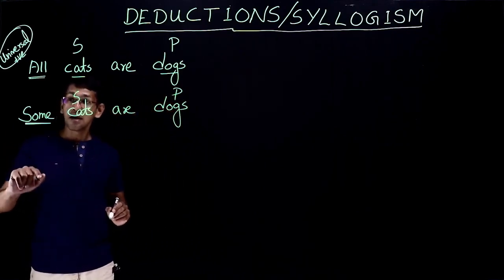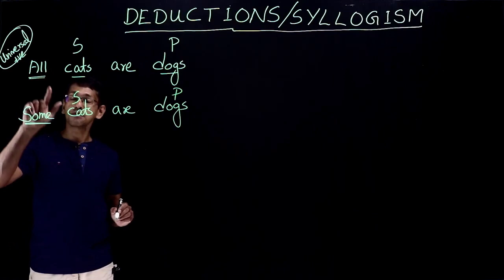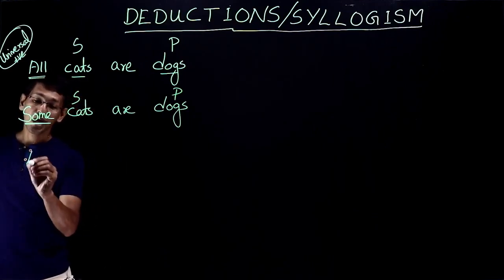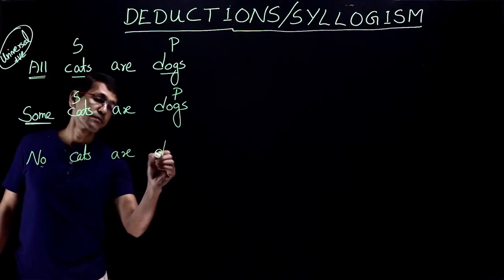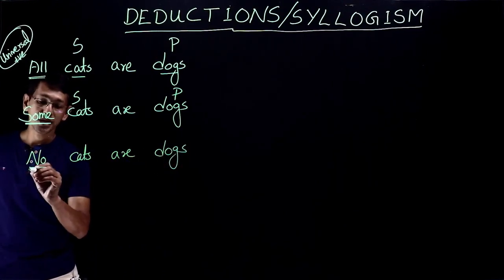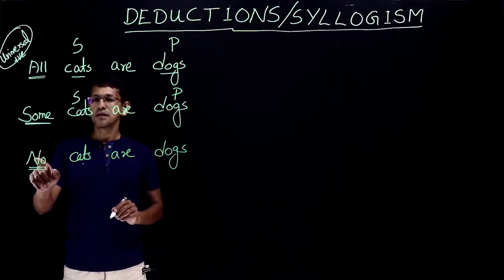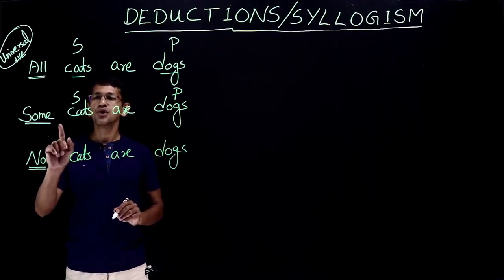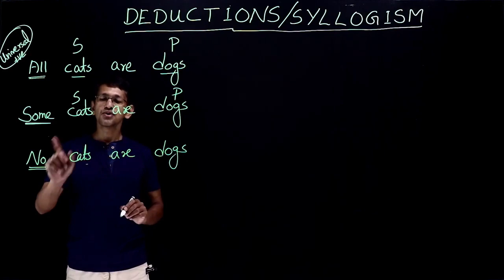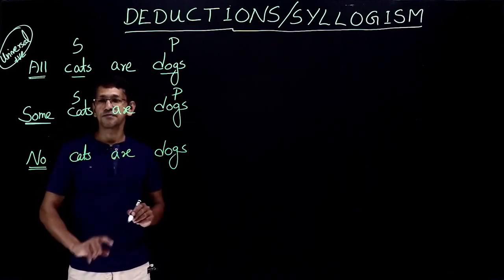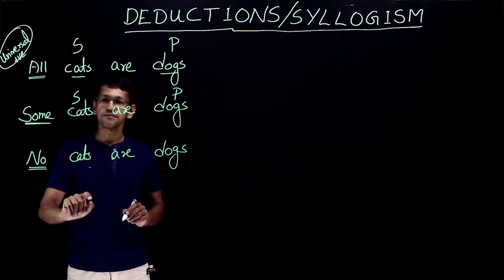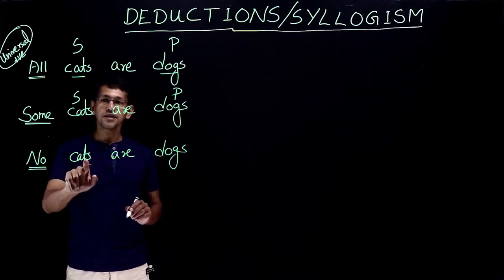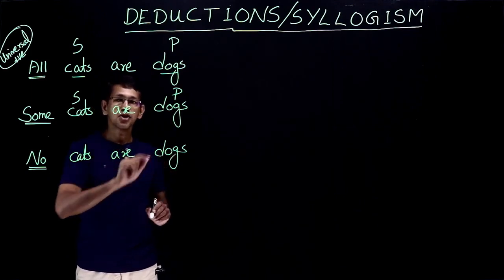The third statement starts with "no" — no cats are dogs. The identifier is "no". If we have "no" or "not" in a statement, it's a negative statement. So this is known as a universal negative statement. The first term, cats, is the subject and dogs is the predicate.